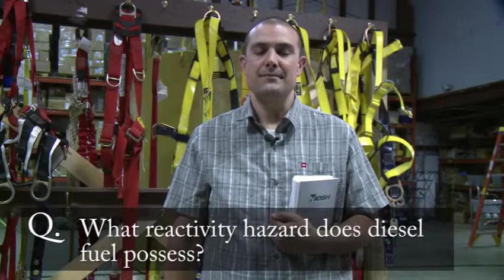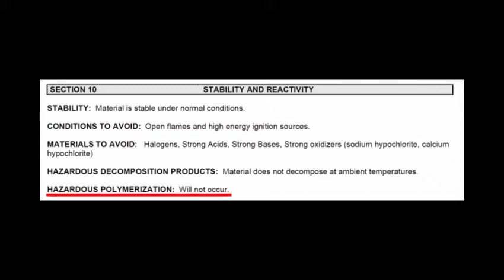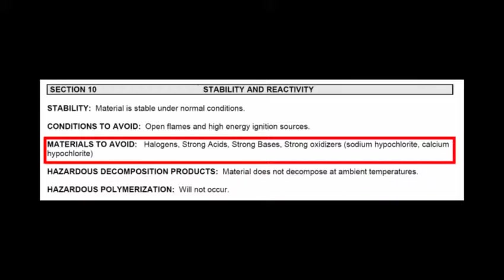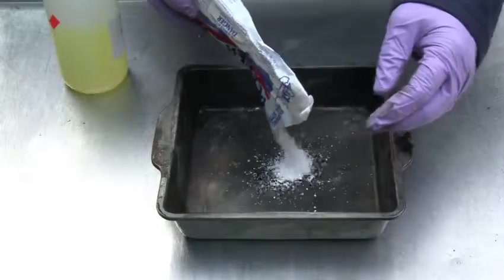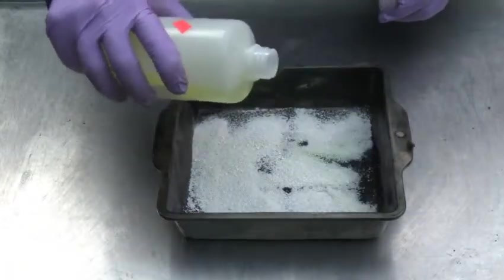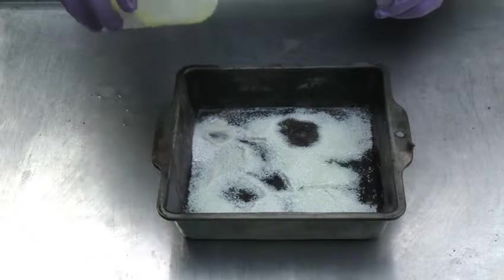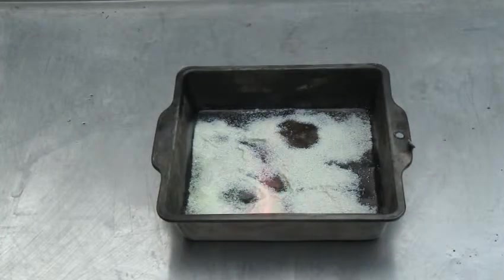The last physical hazard to discuss is any potential reactivity hazards associated with diesel fuel. Section 10 of an MSDS addresses reactivity hazards. Diesel fuel is stable — it will not polymerize or react with itself — and we must avoid open flames and ignition sources. However, the MSDS also lists materials to avoid: these are all oxidizers, which will initiate a fire when mixed with diesel fuel, and under the right conditions could also initiate an explosion. Here, calcium hypochlorite — an oxidizer widely used as a pool biocide — is mixed with diesel fuel and set aside. The two react slowly at first, generating heat, until sufficient heat is generated to initiate a fire.